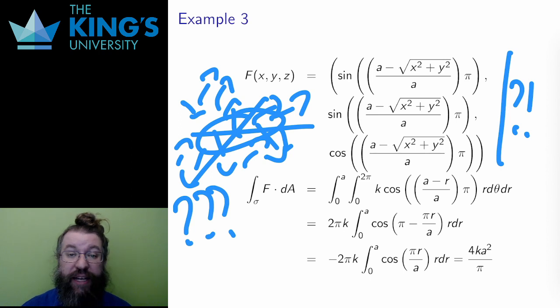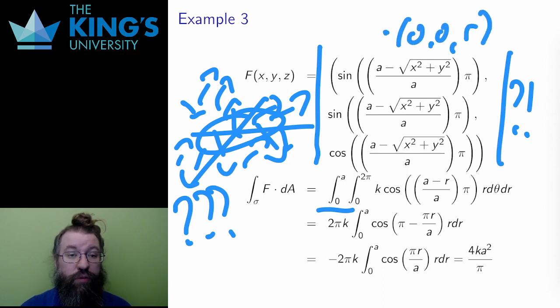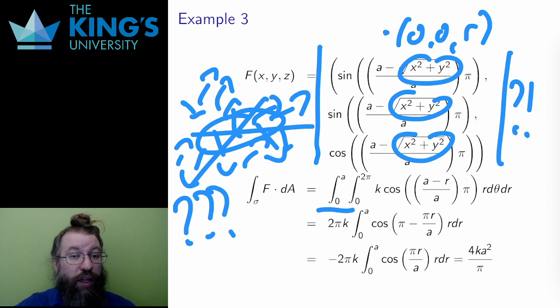I do the same integral. I take the dot product of the field evaluated on the surface with the normal. In the field, x and y are replaced by the components of the surface, so that x squared plus y squared is r squared, and the square root of x squared plus y squared is just r. That's what it means to evaluate the field on the surface.